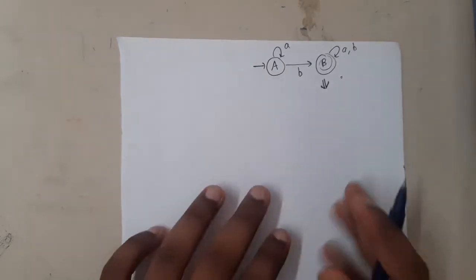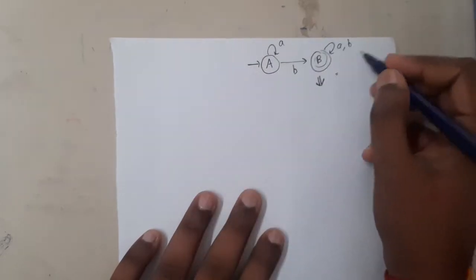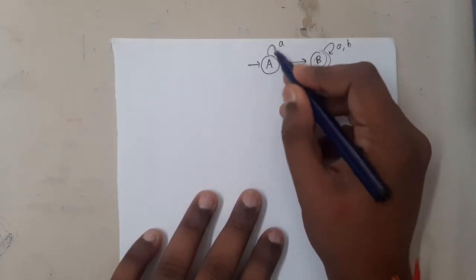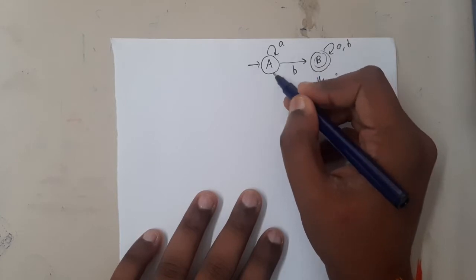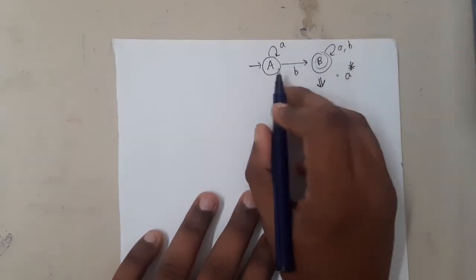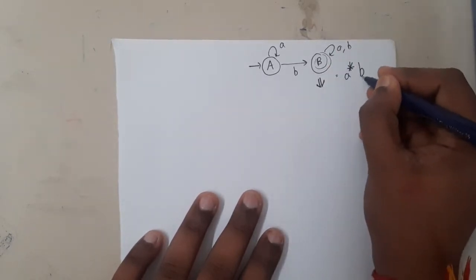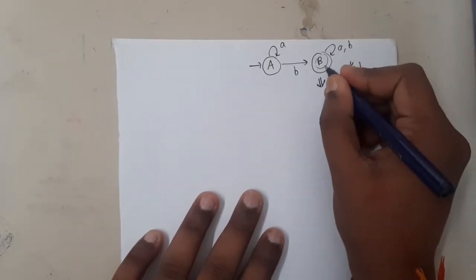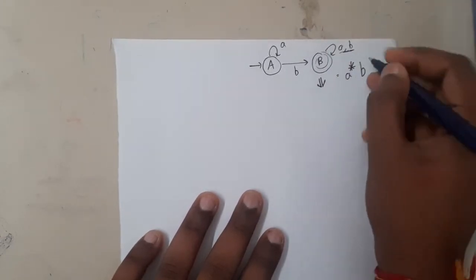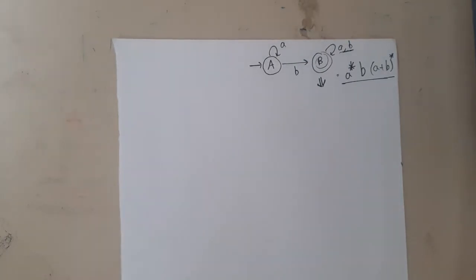Here we are starting at state A. A has a self-loop on 'a', so indirectly we can have as many 'a's as we want, or even zero 'a's — so that's a-star. To move from A to B, one 'b' is mandatory — we cannot skip it and cannot have two b's. Now at state B, we have a loop with 'a' and 'b', so indirectly we can make any combination of a and b — that is (a+b)*. So the answer is a*(b)(a+b)*.